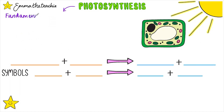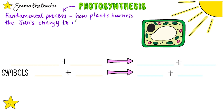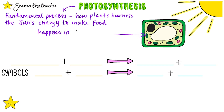Photosynthesis is a fundamental process that has already come up in lots of earlier topics like cell biology. It's how plants harness the sun's energy to make food. This happens in the green parts of the plant, like the leaves and the stem, in the chloroplasts — these little green bits here.